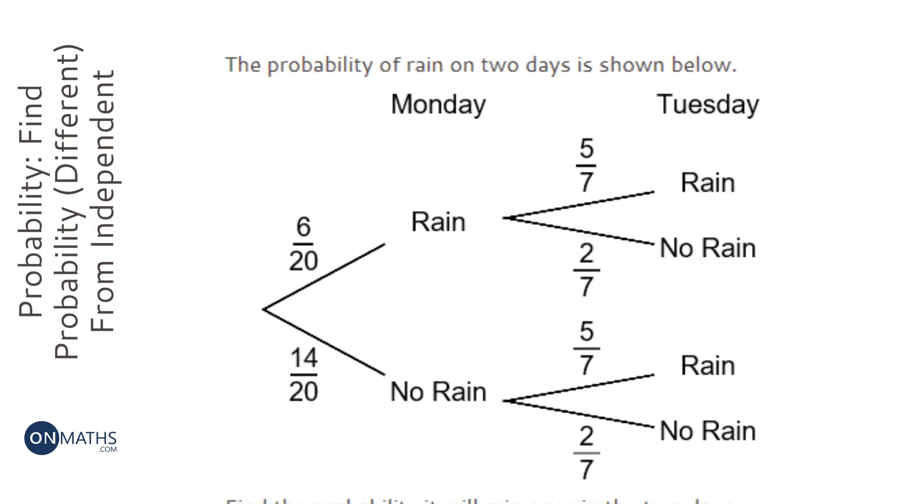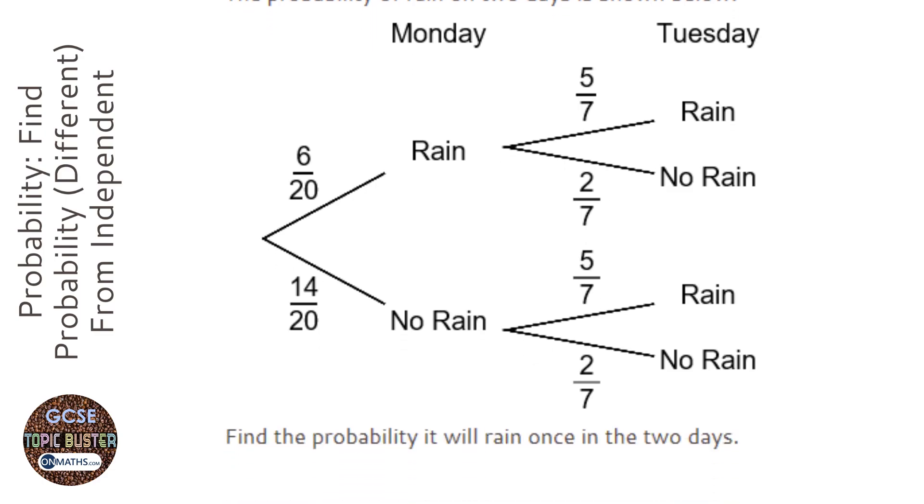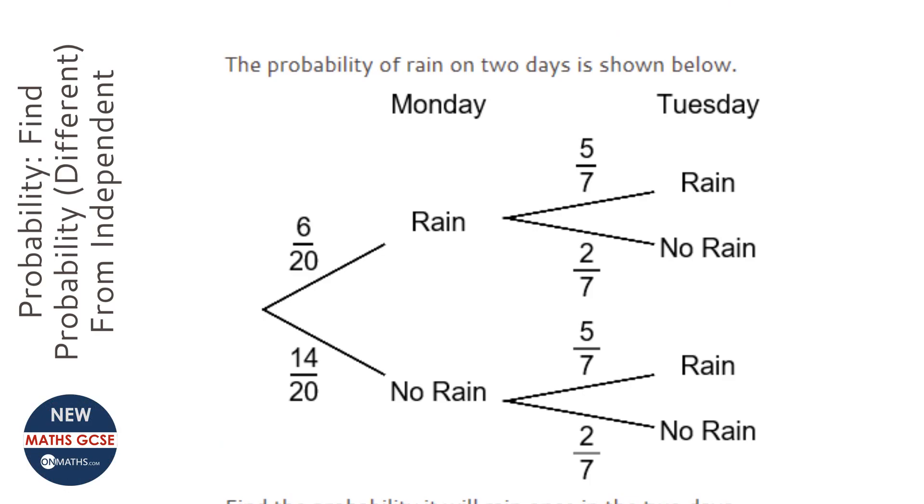We're given the probabilities it will rain on Monday and Tuesday. The probability it will rain on Tuesday is not affected by the probability it rains on Monday, and we're asked to find the probability it will rain once. There are two different ways it can rain once.